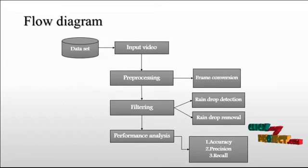Let us discuss the flow diagram of the process. This is the overall flow diagram. The data set will be collecting videos of rain. Then the input video is provided. In the preprocessing step, the input video is converted to frames - a number of frames should be converted.